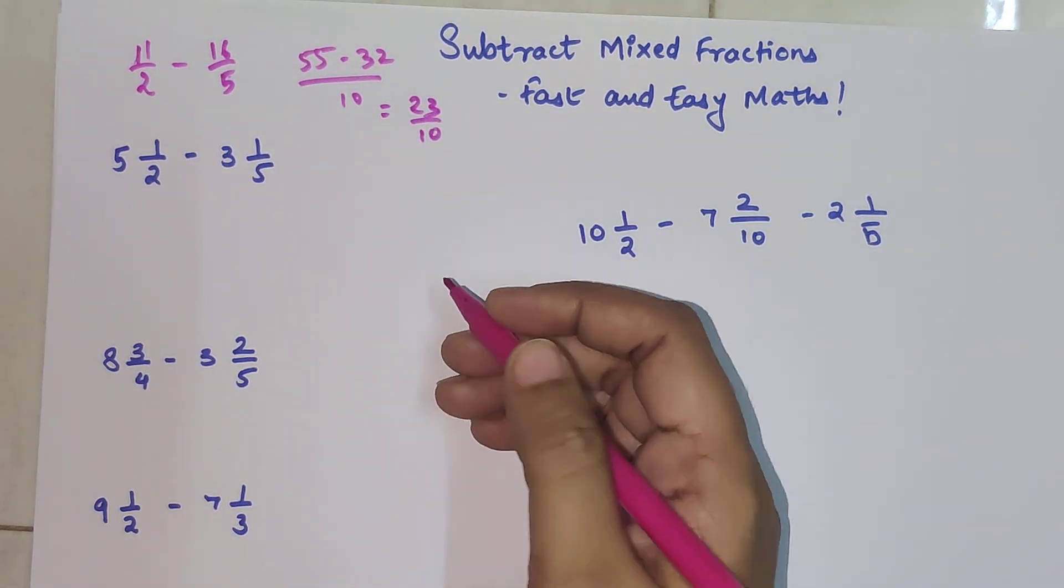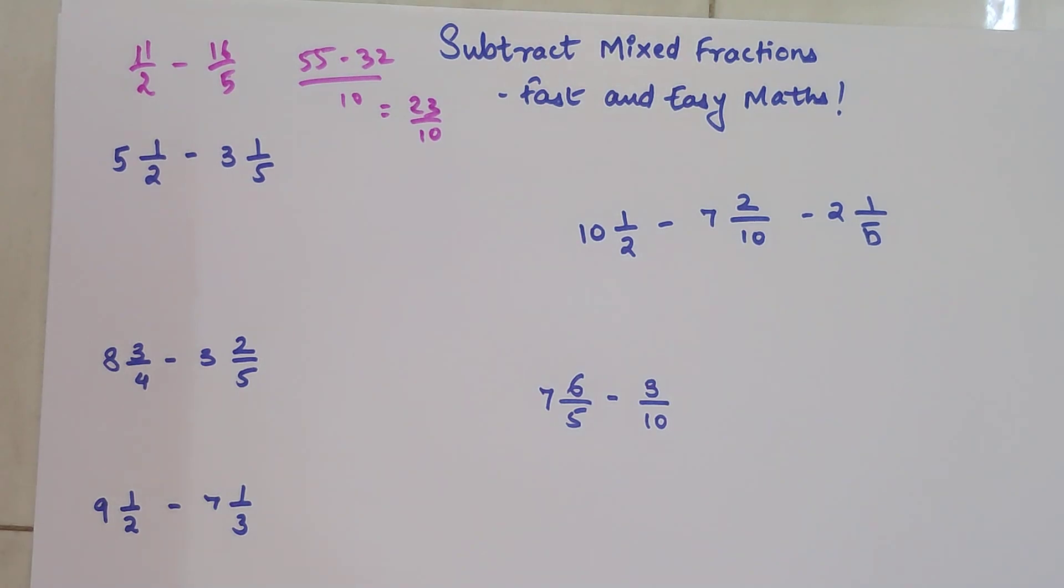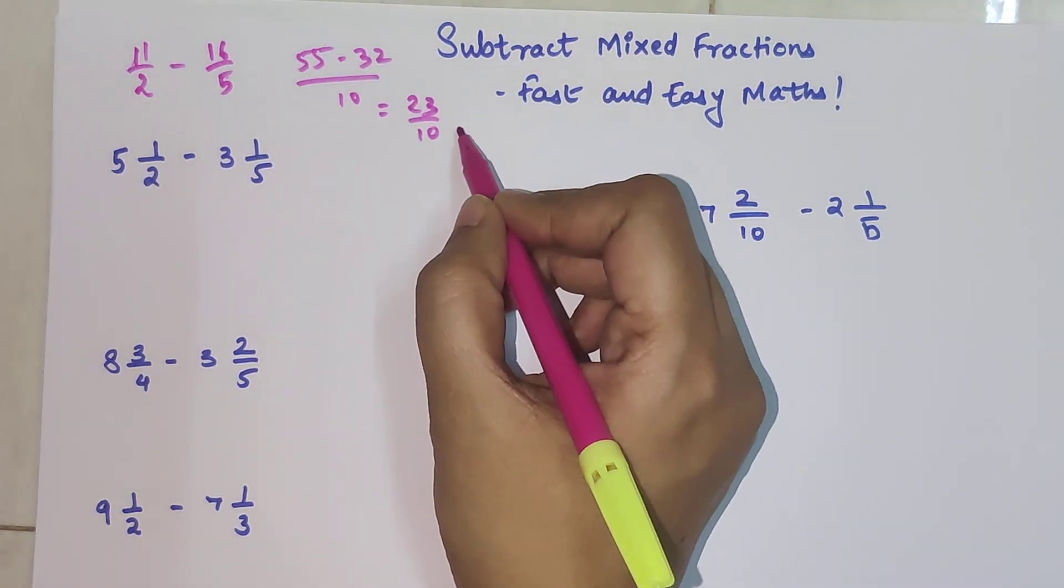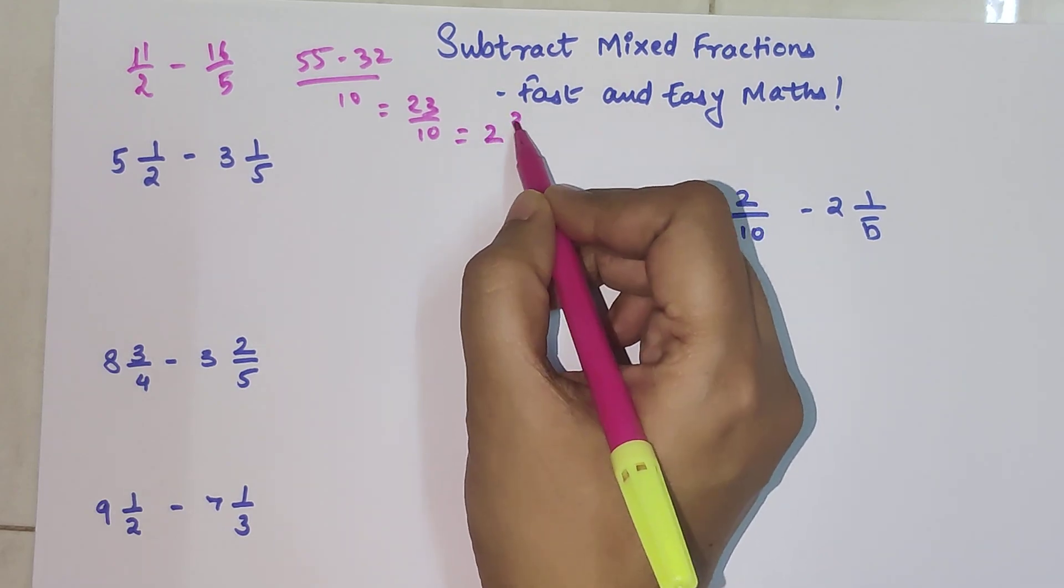Your answer is 23/10 which is an improper fraction. Please understand in mathematics we do not accept answers in the form of improper fractions, so we convert it into a mixed form. So your answer is 2 3/10.